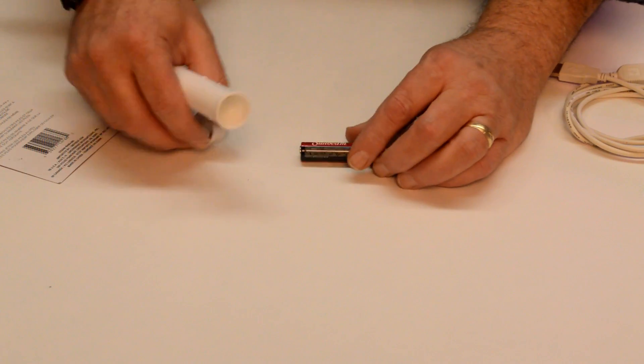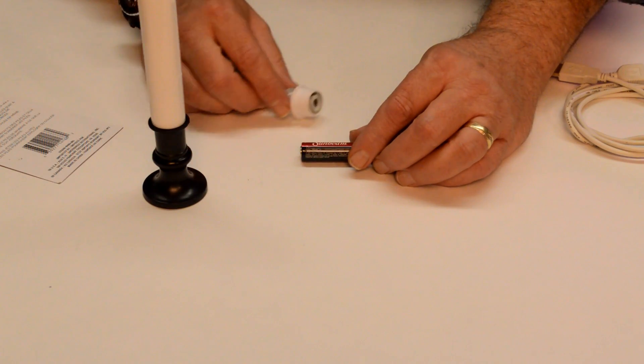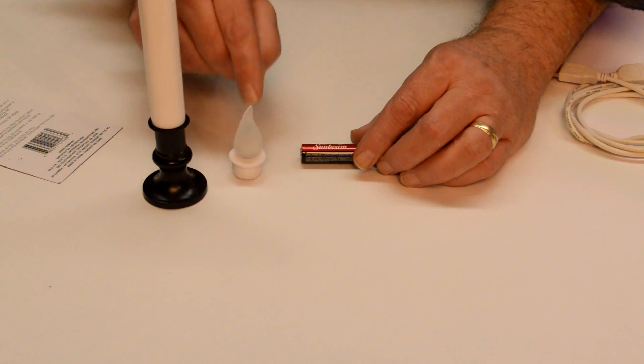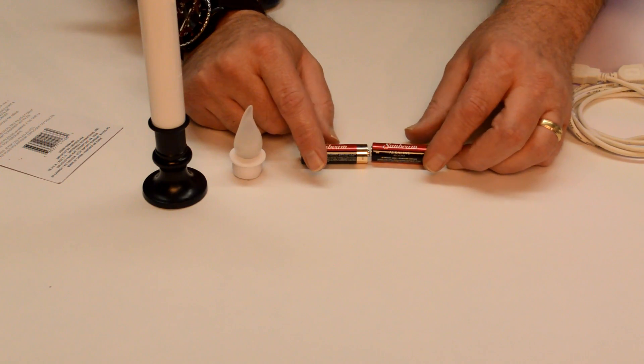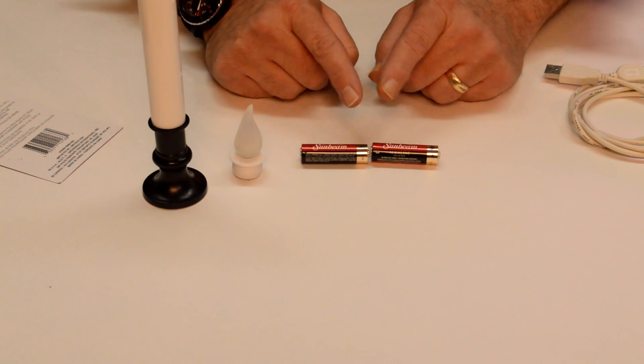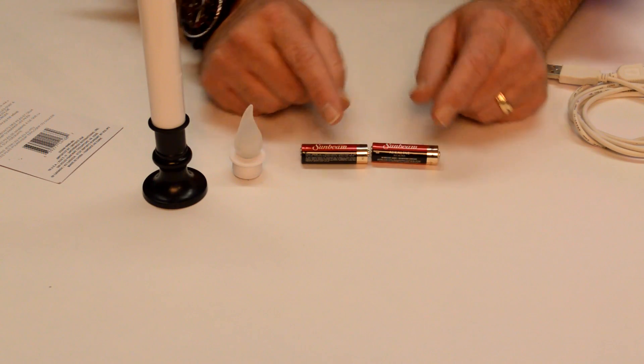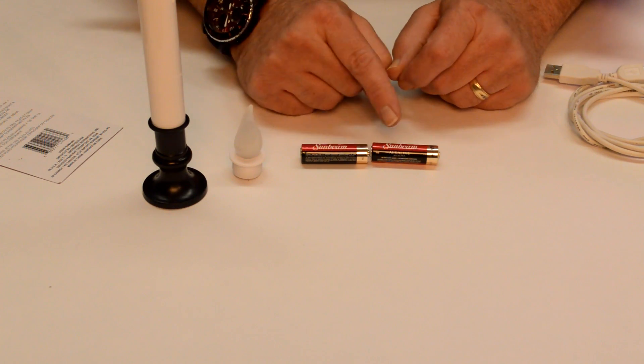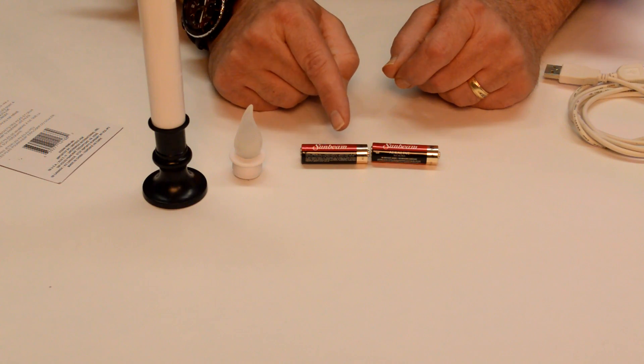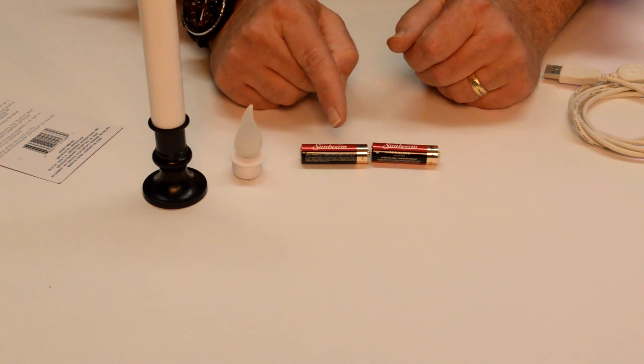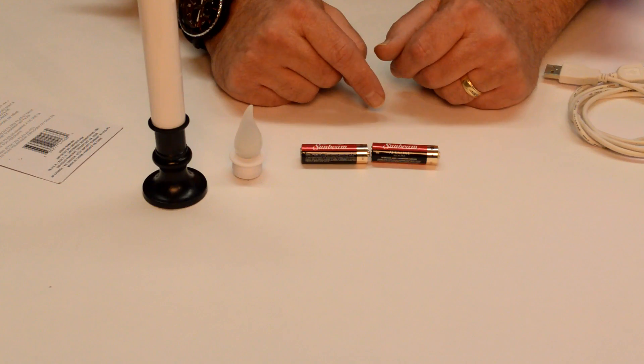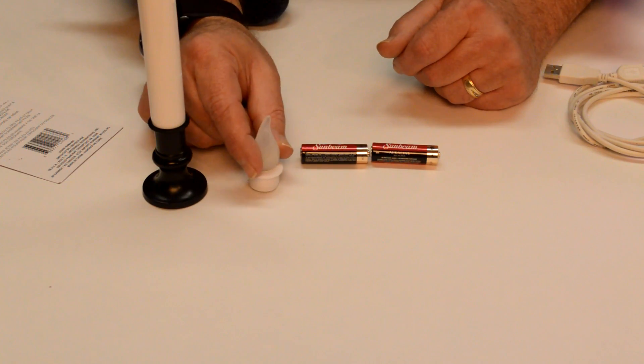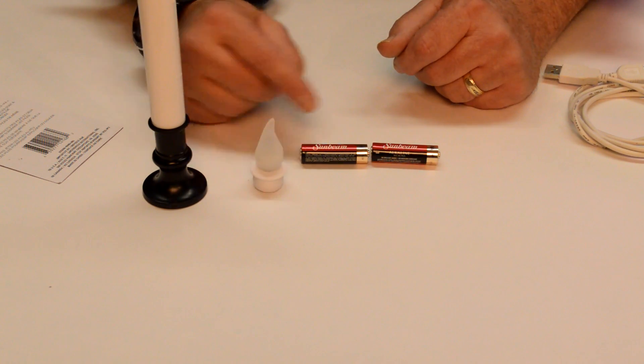Now the first thing that we have to figure out is how much voltage does this take. Now if this uses two ordinary AA cells in series like this then we just add together the voltage. So one and a half volt for each would be a total of three volts. So we know that this candle, this light takes three volts to operate.